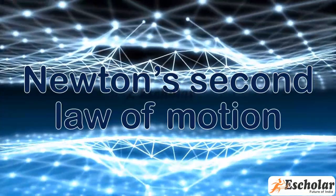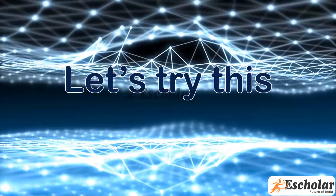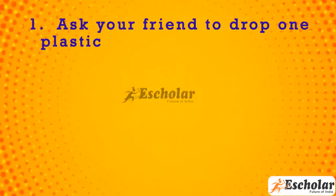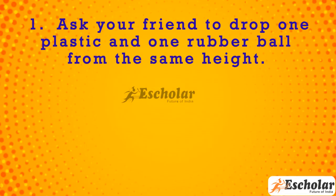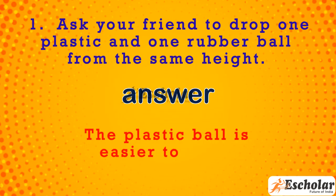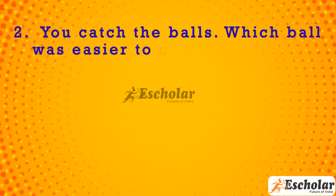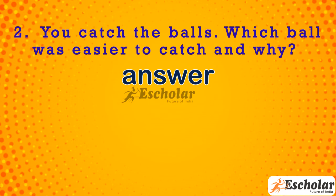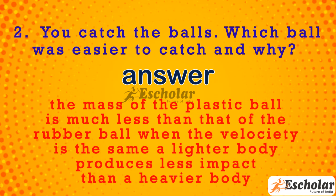Newton's second law of motion. Let's try this. Ask your friend to drop one plastic and one rubber ball from the same height. Which ball was easier to catch and why? The plastic ball was easier to catch. The mass of the plastic ball is much less than that of a rubber ball. When the velocity is the same, the lighter body produces less impact than a heavier body.